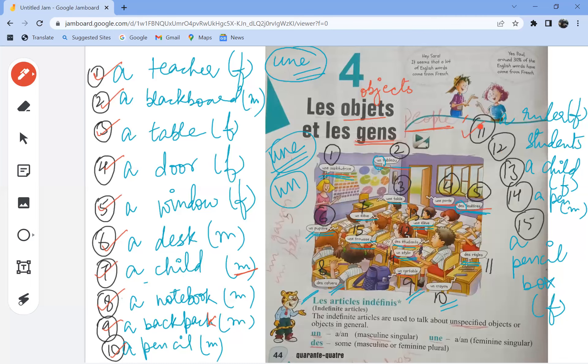Une règle is a scale. Des étudiants, students. Une élève, a girl child, feminine. Fourteenth, a pen, that is un stylo. A pencil box, une trousse.